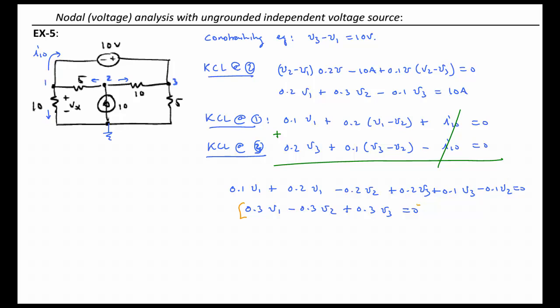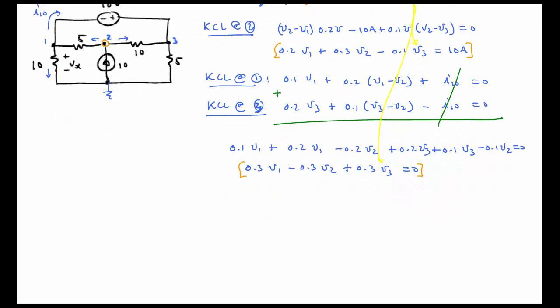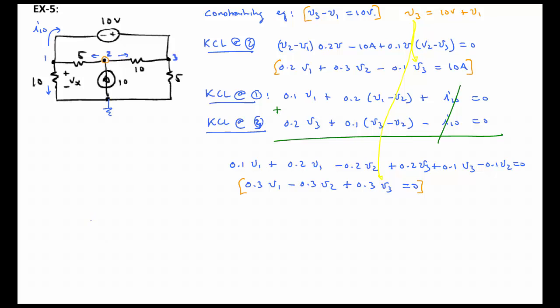Now we have this equation here that is in V1, V2, and V3. And we have this initial KCL equation from node 2 here that is in terms of the same three unknown voltages. And we have a constraining equation that V3 minus V1 is equal to 10 volts. What we could do is we could rewrite this constrained equation expressing V3 as 10 volts plus V1, and then we could go and plug V3 into these two equations. That will lead us to two equations and two unknowns.